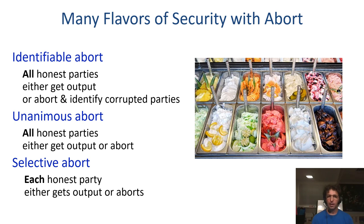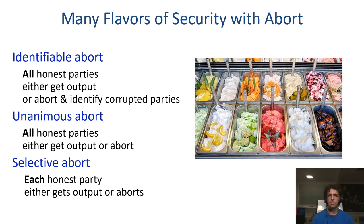An even weaker notion of security is called security with selective abort, or non-unanimous abort. Here we no longer have the guarantee that all honest parties get the output or not. It could be that each honest party on its own locally gets the output, or identifies that an attack took place, but honest parties cannot reach agreement on whether they all got the output or not.